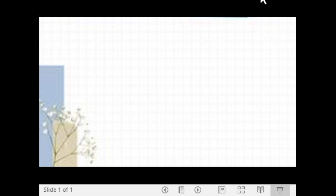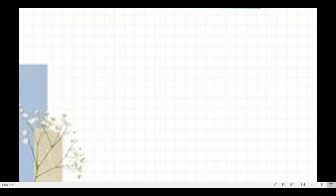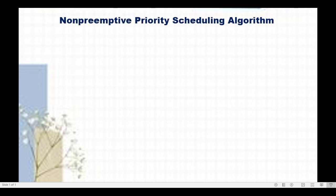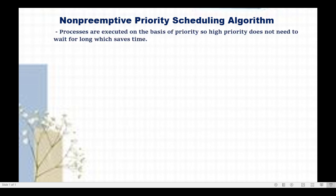Welcome to the computation of average turnaround time and average waiting time using another type of CPU scheduling algorithm, which is known as non-preemptive priority scheduling algorithm. Non-preemptive means that if the CPU is allocated to a process, that process will hold the CPU until its execution time. Processes are executed on the basis of priority, meaning high priority does not need to wait for long, which saves time.